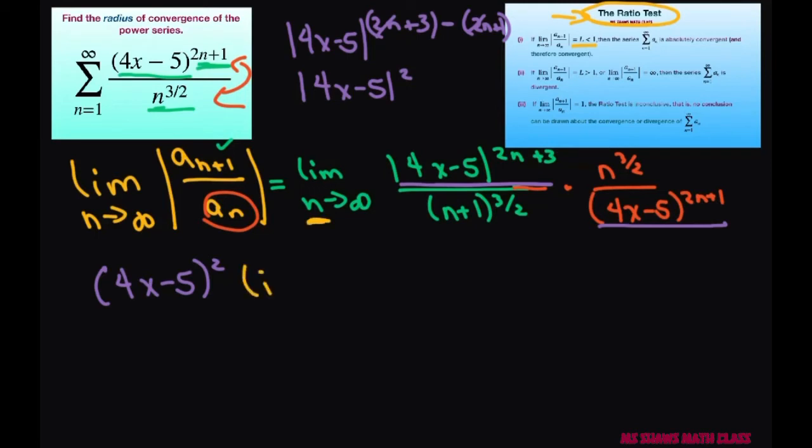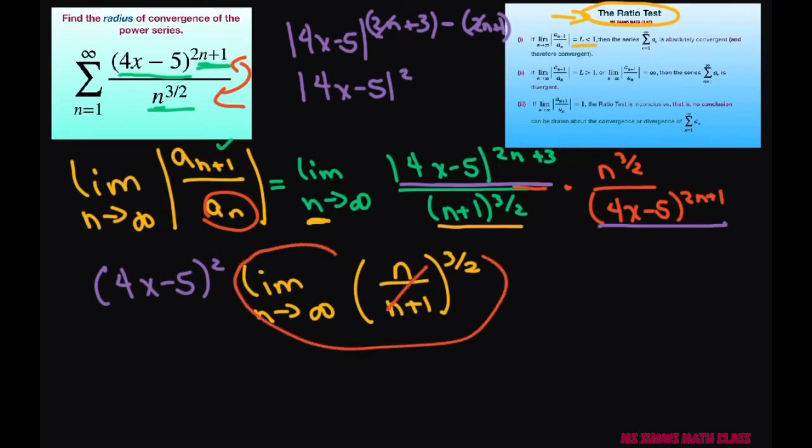So now we're going to write our limit as n approaches infinity, and our n is going to be n divided by n plus 1 to the power of 3 halves. Well, this just equals 1. So this whole thing equals 1.